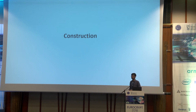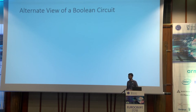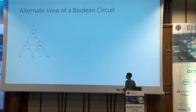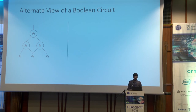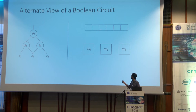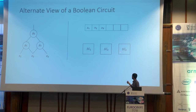Let me go into the ideas behind our construction. To garble a Boolean circuit, we view it in a different form. Take a simple Boolean circuit with three bits X1, X2, X3, three gates, and a single output gate. We view this Boolean circuit as a sequence of three step circuits along with a database. The database is initially populated with inputs X1, X2, X3, and each step circuit implements a single gate of the original Boolean circuit.